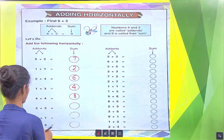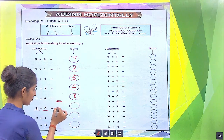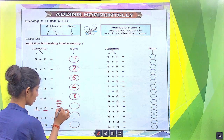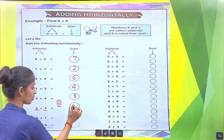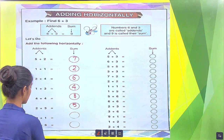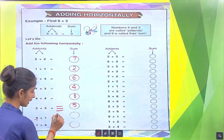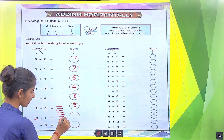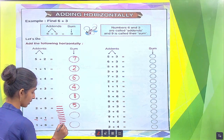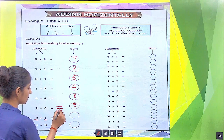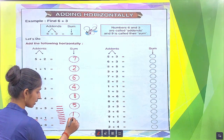Next, there are 2, so we draw 2 lines. There are 3, so we draw 3 more lines: 1, 2, 3. Now calculate the total lines: 1, 2, 3, 4, 5. So we put here 5. Similarly, in the next, there are 9, so we draw 9 lines: 1, 2, 3, 4, 5, 6, 7, 8, 9. There is 1, so we draw 1 more. Total: 1, 2, 3, 4, 5, 6, 7, 8, 9, 10. So we put here 10.